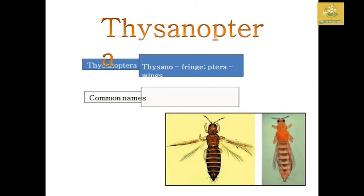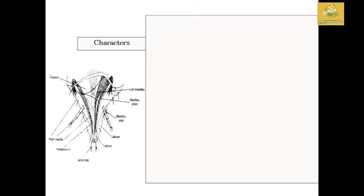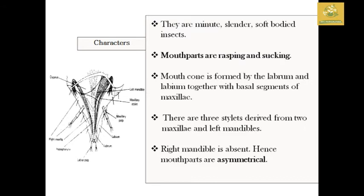In the Thysanoptera order, the wings are fringed — that is the key defining feature. Thysanoptera insects are very small, slender, and soft-bodied insects.